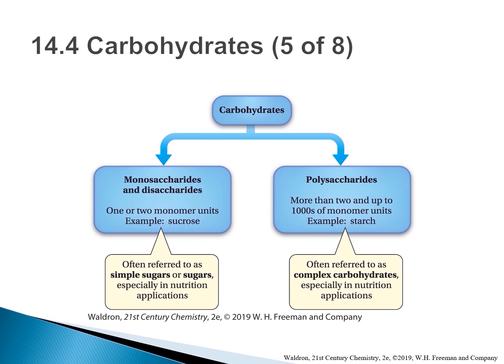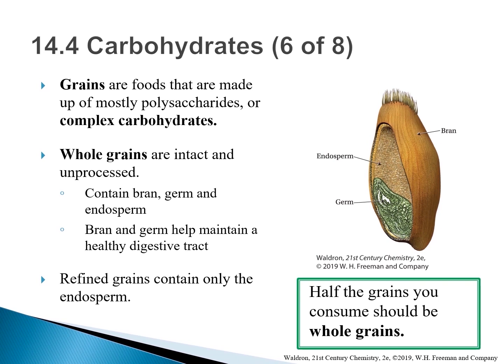The term 'carbohydrate' refers to all saccharides, large and small. A 'sugar' or 'simple sugar' refers to carbohydrates with only one or two monomer units — so sugar is a synonym for both monosaccharide and disaccharide. In everyday usage, 'sugar' refers to table sugar, a specific disaccharide called sucrose. The term 'complex carbohydrate' refers to a polysaccharide containing hundreds or thousands of individual saccharide monomers — the primary ingredient in foods such as potatoes, rice, and bread. The term 'grains' refers to foods composed mainly of complex carbohydrates.